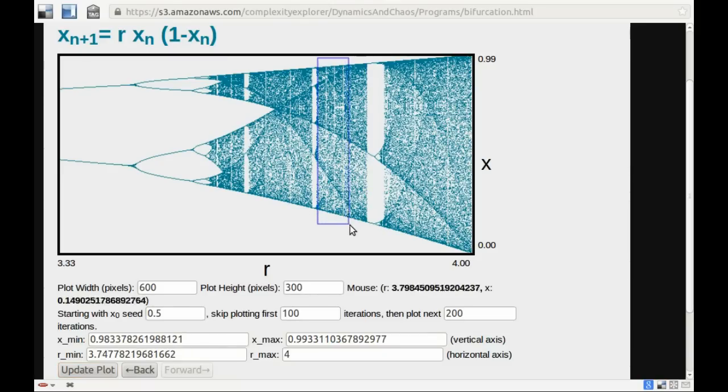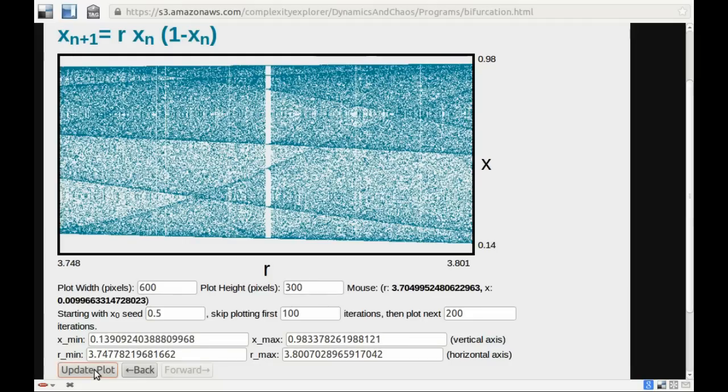Let me zoom in here. And again we can see some windows. There's a period 7 window.